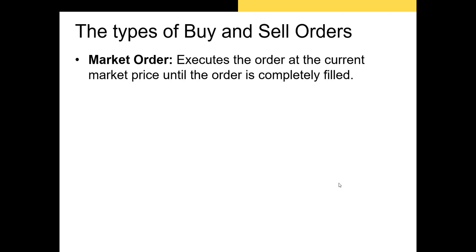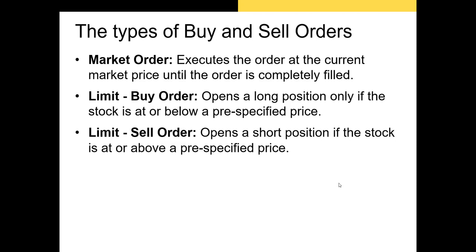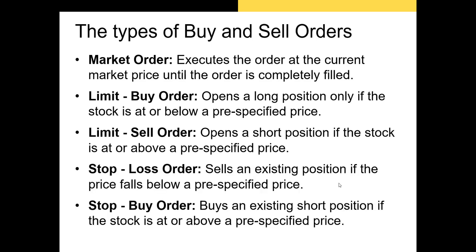There are many types of orders you can use to buy and sell securities. The simplest is a market order — it tells your broker you want to buy or sell a set number of shares for the best price you can get. A limit buy order tells your broker you only want to buy shares at or below a specific price. A limit sell order tells your broker you want to sell shares at or above a certain price. Stop loss orders tell your broker to sell your shares if the stock falls to a certain price, keeping you from holding onto stocks whose price is tanking.